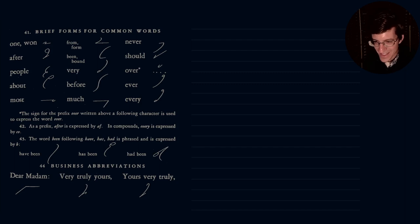Brief forms for common words. So some more of these really handy words. So we have one and one. So that is our, if you remember, that was our U hook, right? And then so the U versus O, U, O. So that's one. After. People. Look at that. Gregg's ahead of its time. We've got peeps. Hey, peep. About. Most. From, or form. Been, or bound. Very. Before.